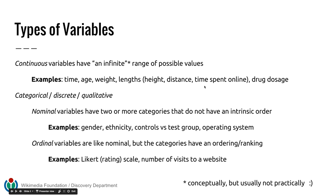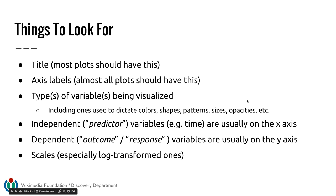When looking at a particular visualization, one of the things you're trying to identify is what type of variable is being presented — whether it's a categorical variable or a continuous variable — or maybe there are multiple variables being shown, and what you're getting is a story about possible relationships those variables can have.